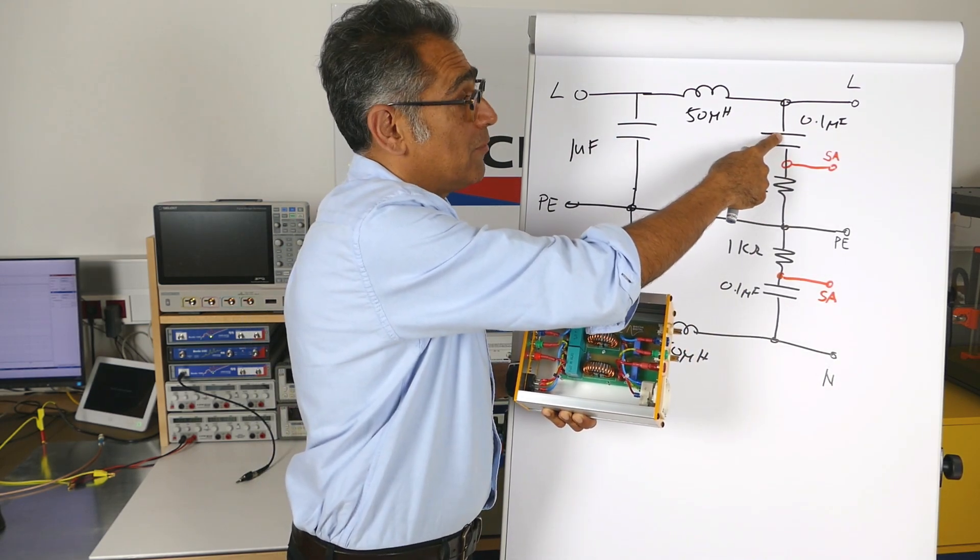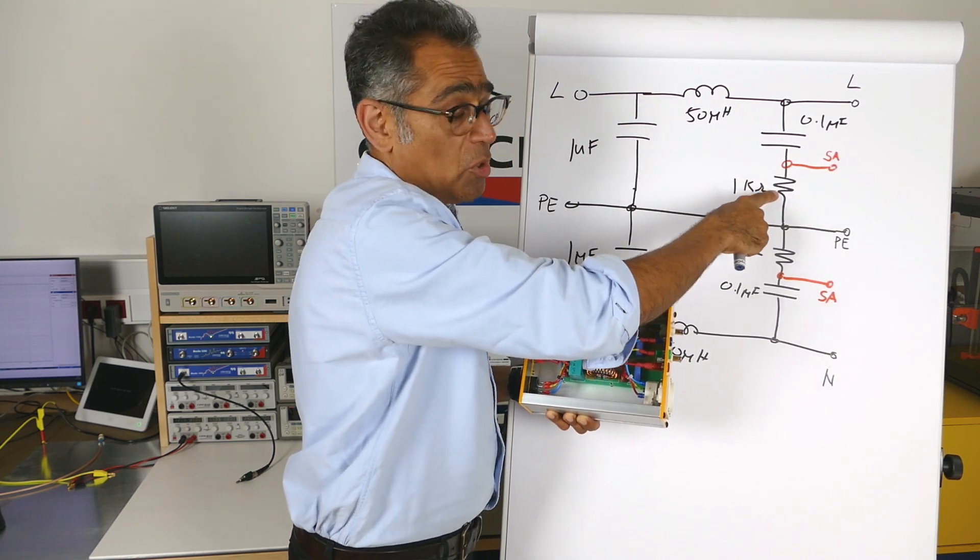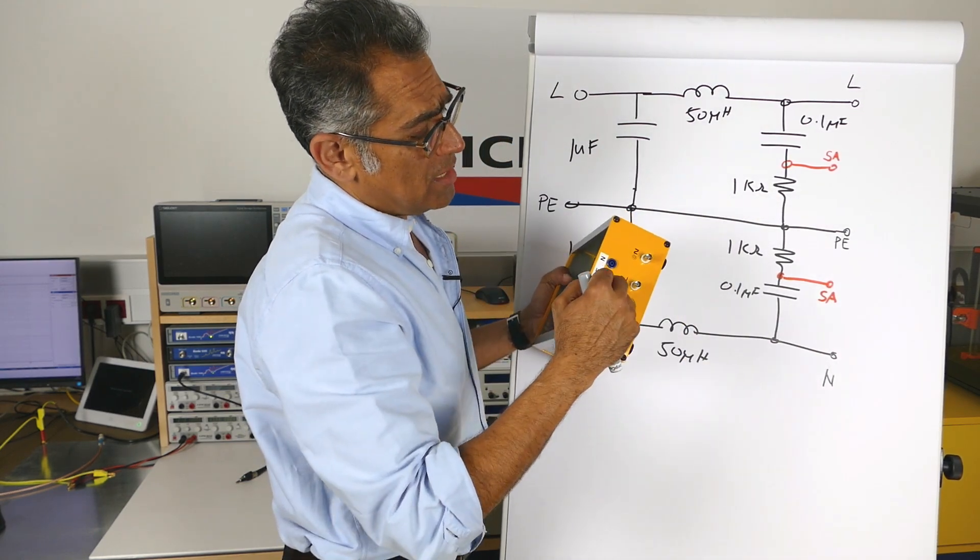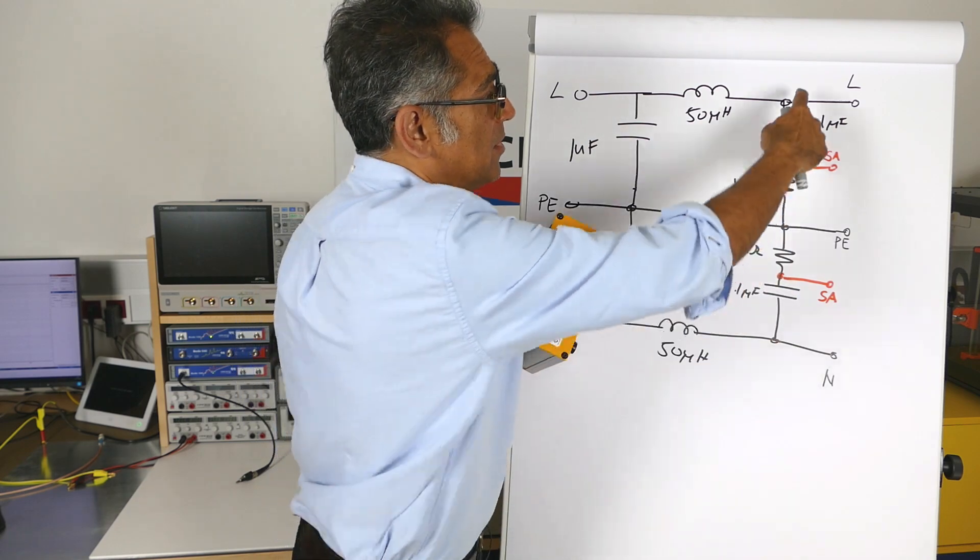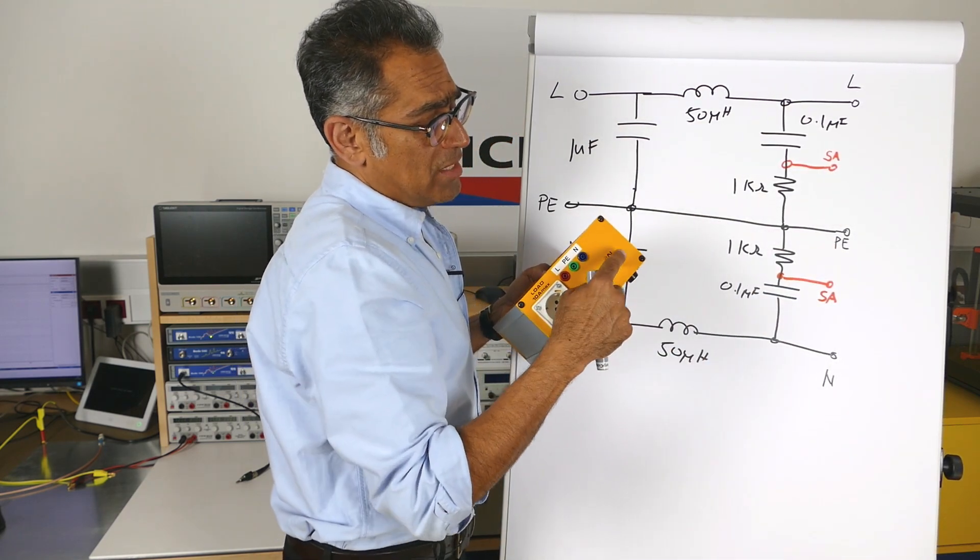It's a 0.1 microfarad capacitor so that when you connect your spectrum analyzer you don't blow the front end up. And then on the front you have got the live, neutral and protective earth. Live, neutral and protective earth and then the noise is seen on these two channels.